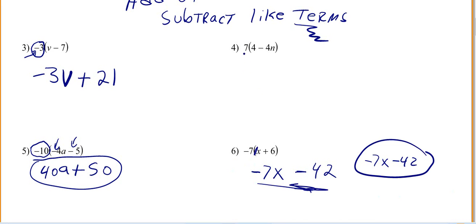What I care about is if you're getting your computations. So let's do number 4. That's a positive. So we're not going to have to worry about the signs. 7 times 4 is 28. Minus 7 times 4 is 28n. These are unlike, these are unlike terms.